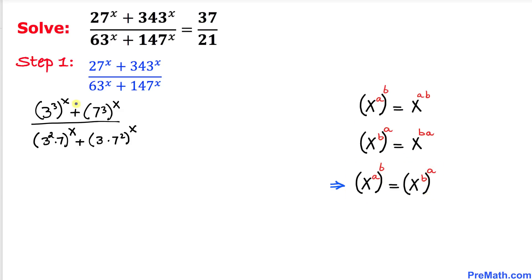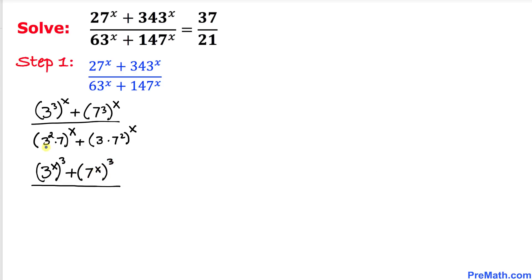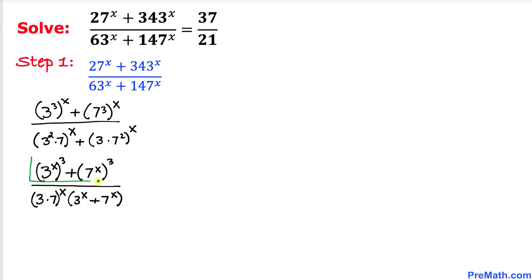Applying this rule to the numerator, we get (3^x)³ plus (7^x)³. For the denominator, we notice that 3 times 7 is common between both terms, so we can factor out (3 times 7) to the power x, leaving (3^x plus 7^x) inside the parentheses.